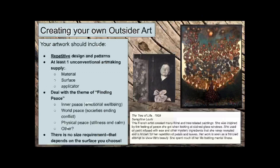Creating your own outsider art. Your artwork should include repetitive design and patterns — that means each design and pattern should show up many times. Include at least one unconventional art making supply. That could be the materials you apply to the surface, the surface itself, or the applicator you use. Your artwork should deal with the theme of finding peace — this could be inner peace such as emotional well-being, world peace such as society ending conflict, physical peace such as stillness and calm, or any other type of peace that fits the theme. There is no size requirement; that depends on the surface you choose.